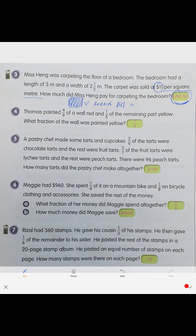Next one: Thomas painted 4/5 of the wall red and 1/5 of the remaining part yellow. What fraction of the wall was painted yellow?